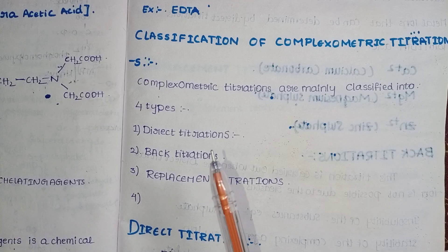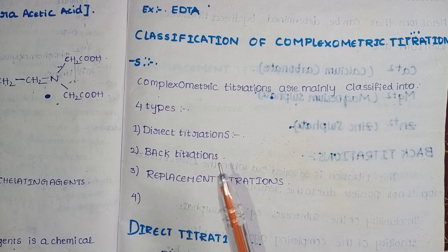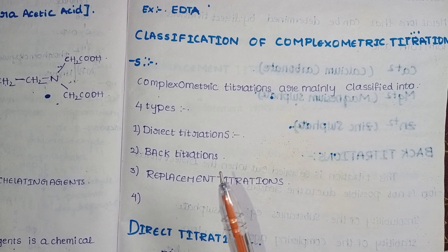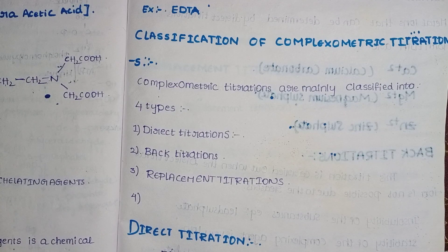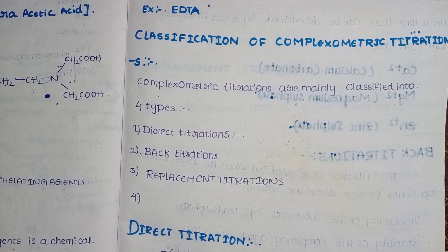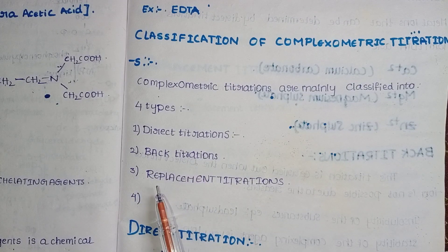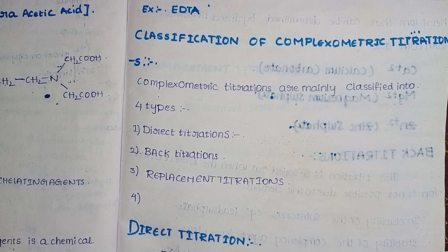Our topic is the classification of complexometric titrations. Complexometric titrations are used with the aim of reacting a metal ion with a chelating agent or complexing agent. These titrations are used in four types: first, direct titrations; second, back titrations; third, replacement titrations; and fourth, alkalimetric titrations.